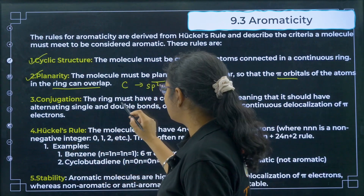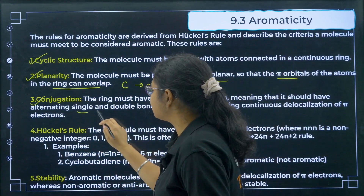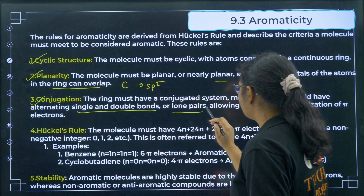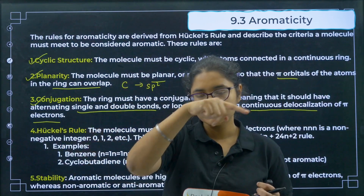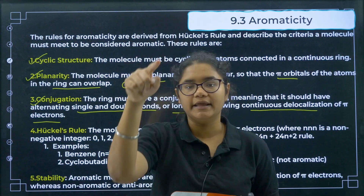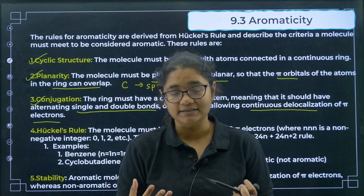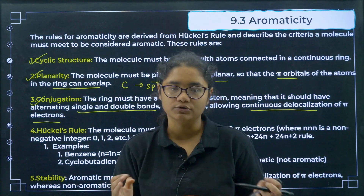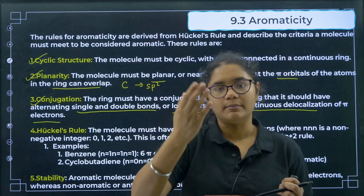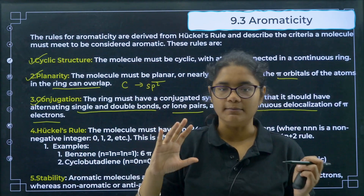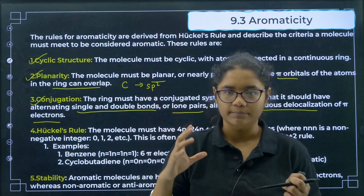The third condition is conjugation: the ring must have a conjugated system, meaning alternating single and double bonds, or lone pairs enabling continuous delocalization of pi electrons. For checking conjugation, you can have a double bond–single bond–double bond pattern, or a lone pair–single bond–double bond pattern, allowing continuous resonance throughout the ring.